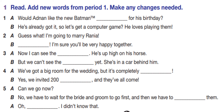Now let's listen to the correct answers — Period 2, Activity 2 and Activity 4. One: 'Would Adam like the new Batman DVD for his birthday?' 'He's already got it, so let's get a computer game — he loves playing them.' Two: 'Guess what — I'm going to marry Rania.' 'Congratulations! I'm sure you'll be very happy together.' Three: 'Now I can see the groom — he's up high on his horse — but we can't see the bride yet. She's in a car behind him.'